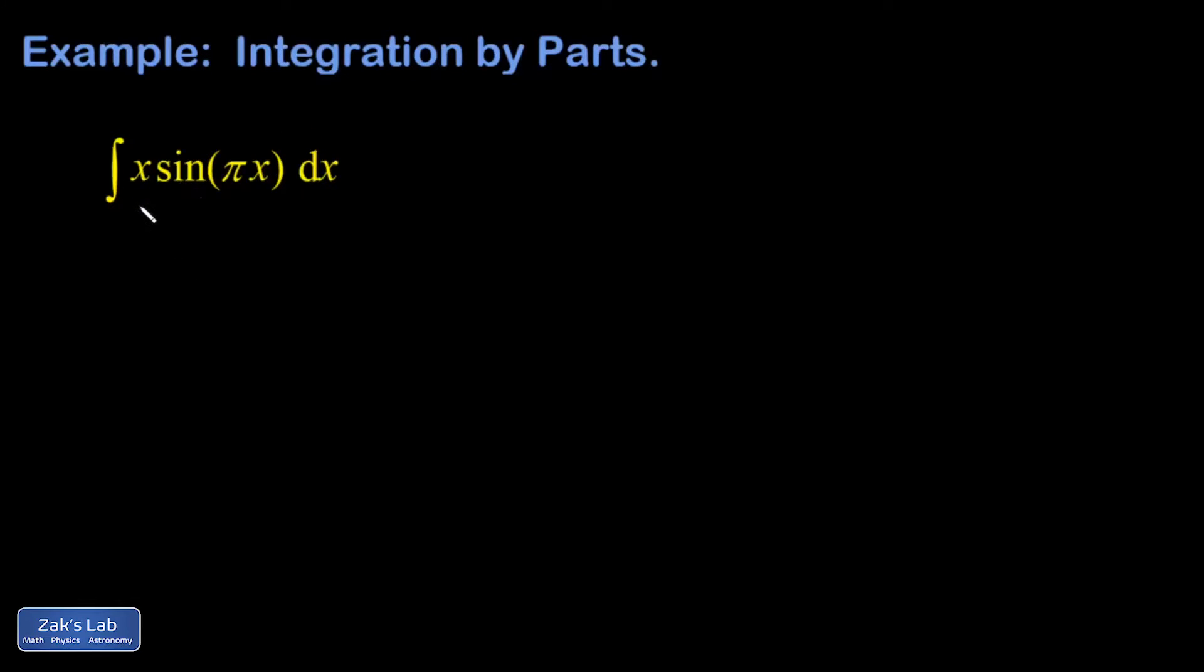Okay, on this one, again, we're going to pick u equals x, because the derivative is clearly simpler than the original function. So du is going to be dx. And then this other leftover piece is going to be dv.